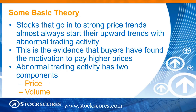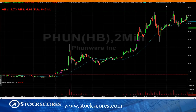Stocks that go into strong price trends almost always start their upward trends with abnormal trading activity. This abnormal trading activity is evidence that the buyers have found some motivation to pay higher prices. There's two components: the price component, how much price changes relative to its normal price movement, and the volume component, how much the stock trades relative to what it normally trades. It's very important to understand that it's all about what's relative to that stock's normal trading. A 5% move for Microsoft is very different than a 5% move for a $2 mining stock. It always has to be judged relative to how the stock normally trades.